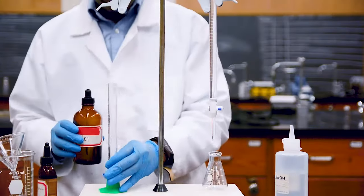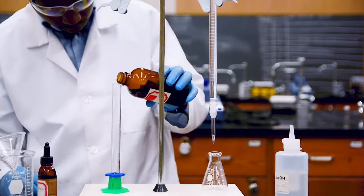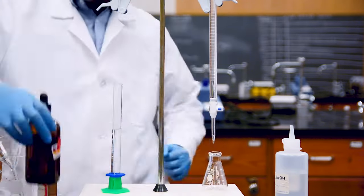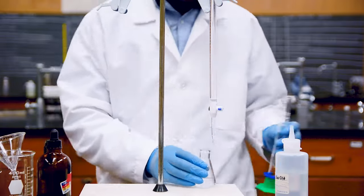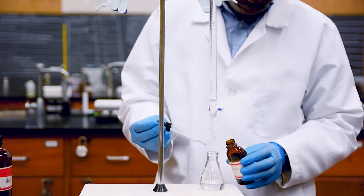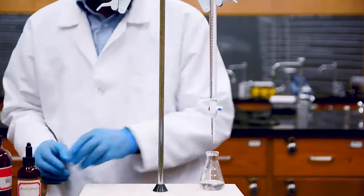Now let's put our acid in the flask, and place this directly below the burette. In this experiment we are using 20 milliliters of HCl solution, but again we don't know the concentration. Let's also add a few drops of the indicator. We're now ready for the titration.